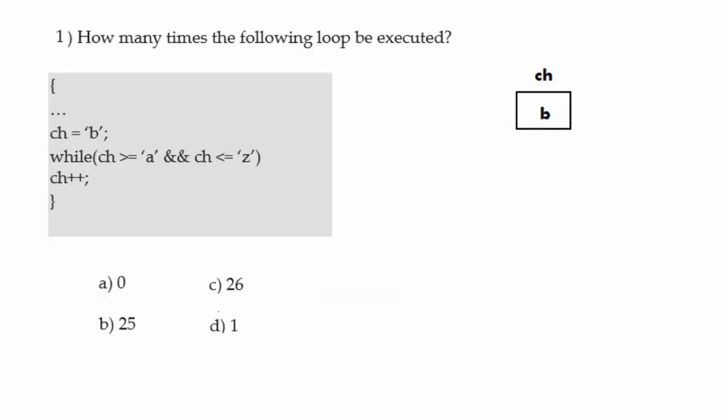In this question you have to tell how many times the following loop will be executed. First there is a variable ch which is initialized with value 'b', and then there is a while loop. The condition is ch greater than equals to 'a' and ch less than equals to 'z'. Inside the while loop there is a single statement ch++, meaning every time the loop executes, ch is incremented by one. The initial value of ch is 'b'.